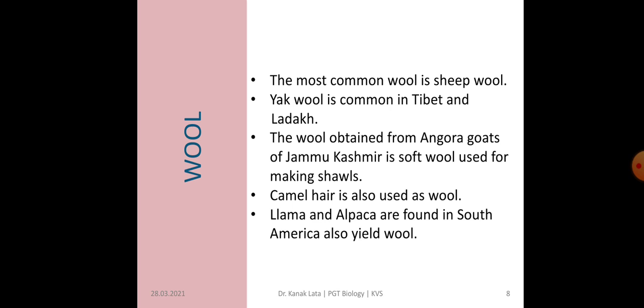The wool obtained from angora goats is very soft wool, so it is used for making shawls. This angora goat is found in Jammu and Kashmir. Camel hair is also used as wool. In South America, llama and alpaca also yield wool — from their bodies, the hairs are taken out and the wool is formed.